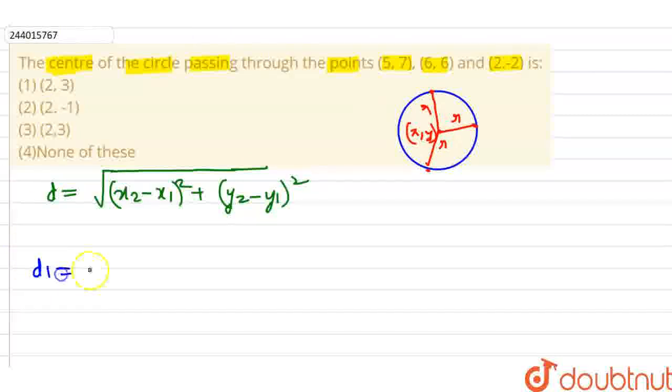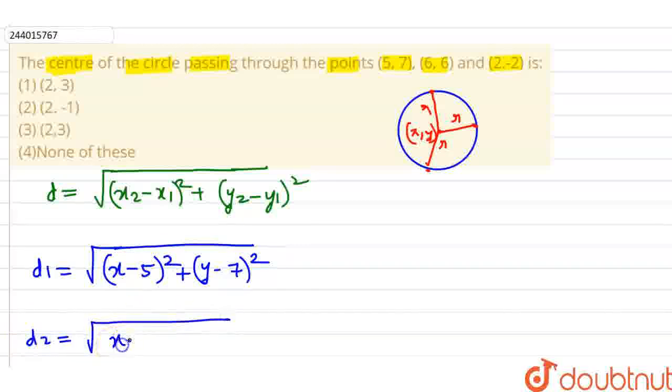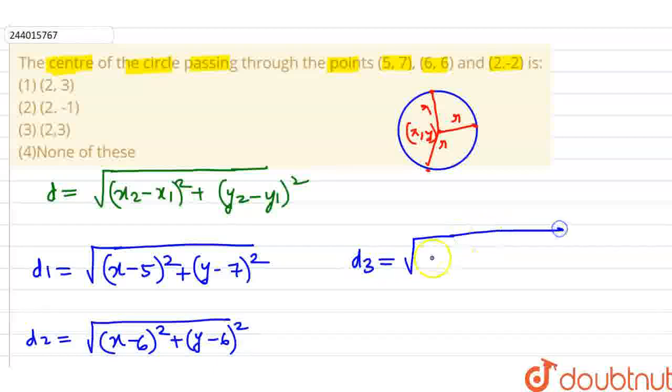Distance d1 is square root of x minus 5 whole square plus y minus 7 whole square. Distance d2 is square root of x minus 6 square plus y minus 6 square. Distance d3 is square root of x minus 2 square plus y plus 2 square.